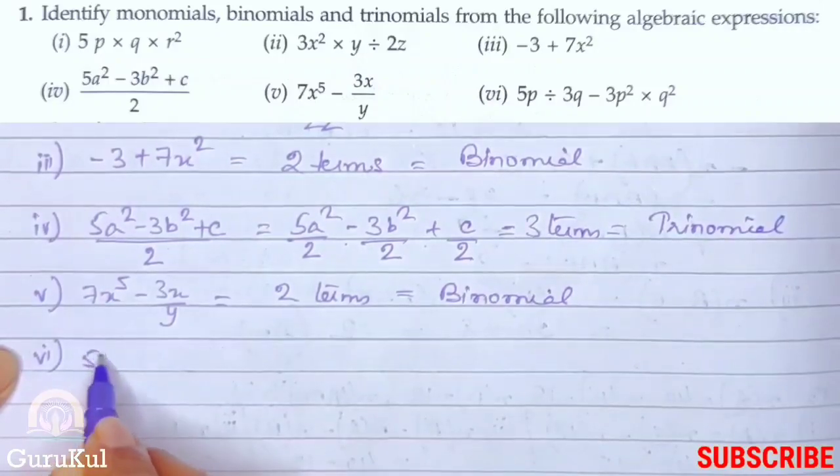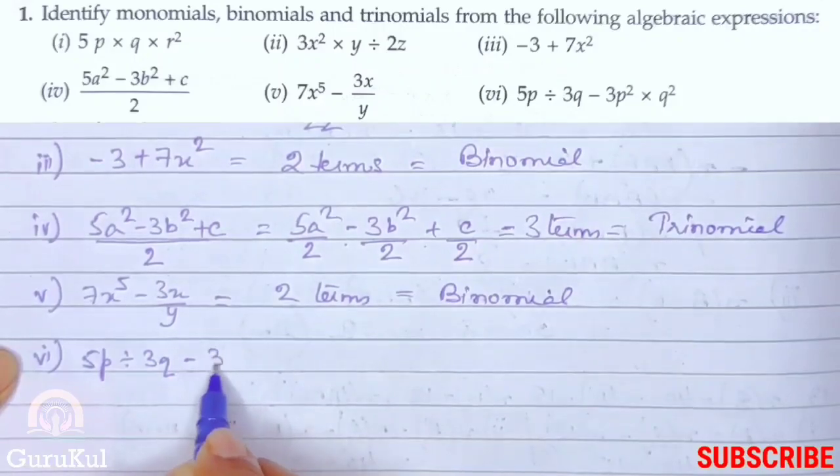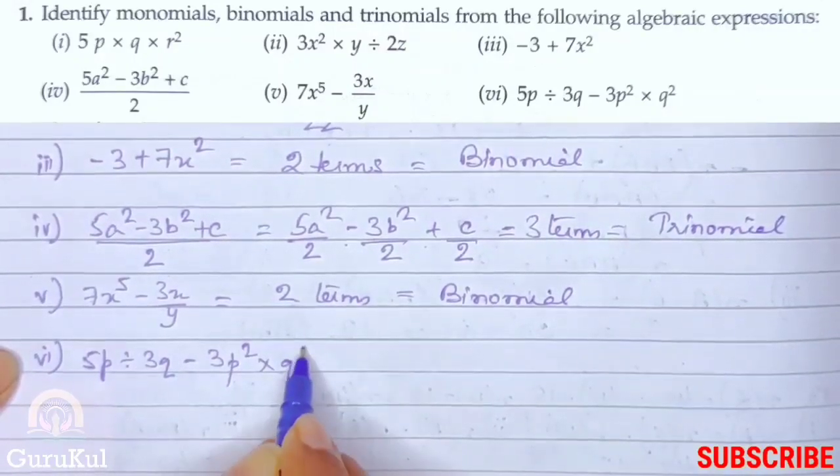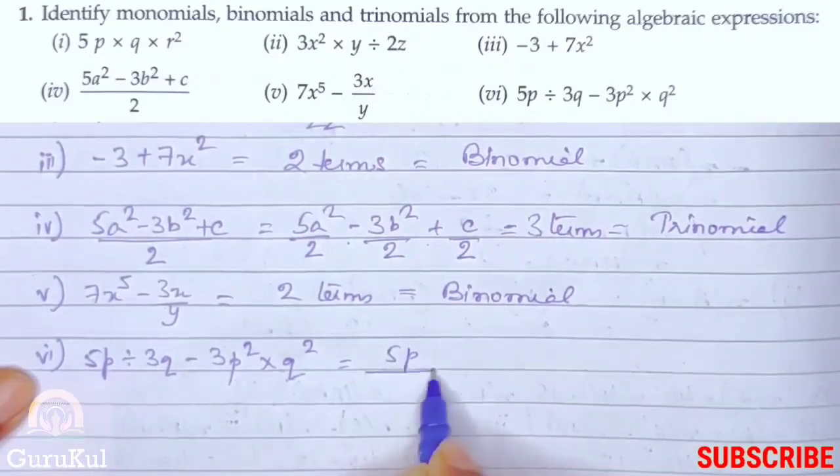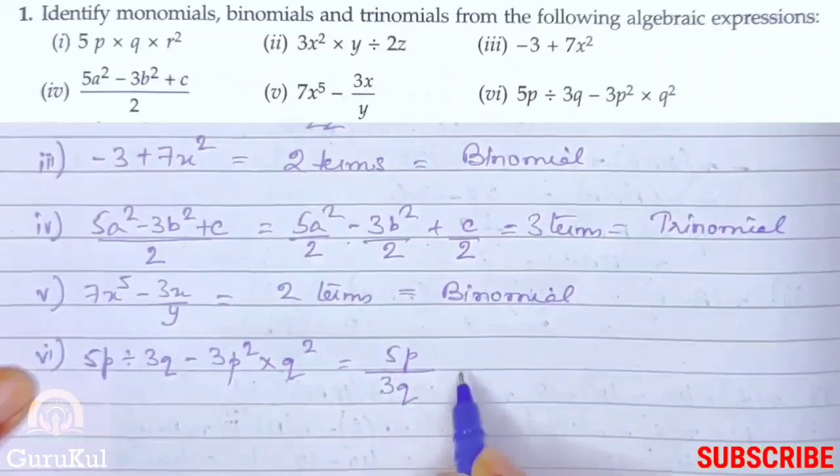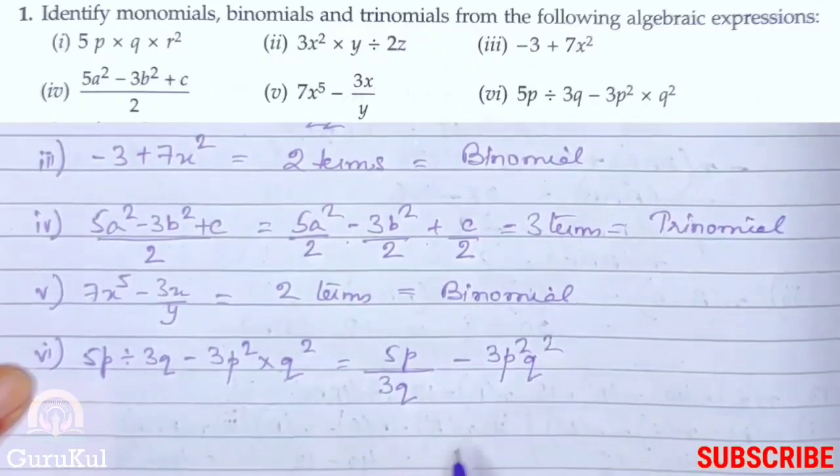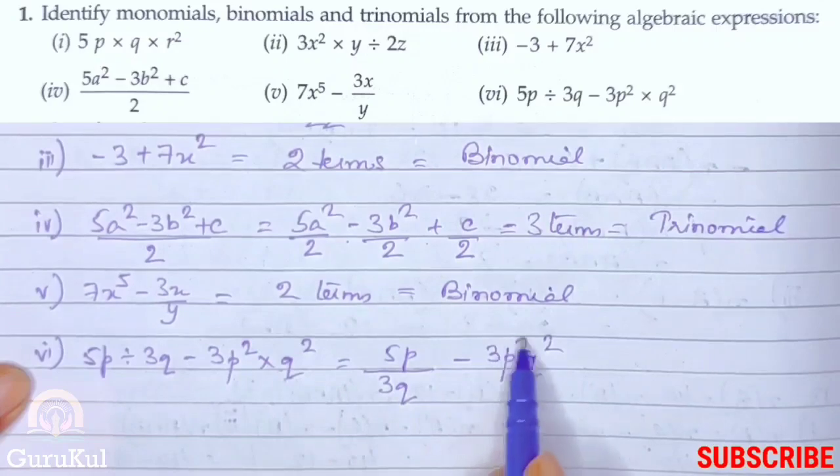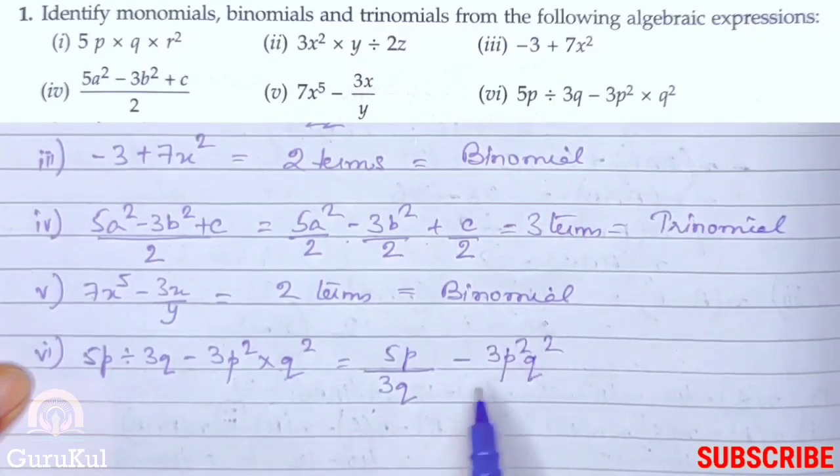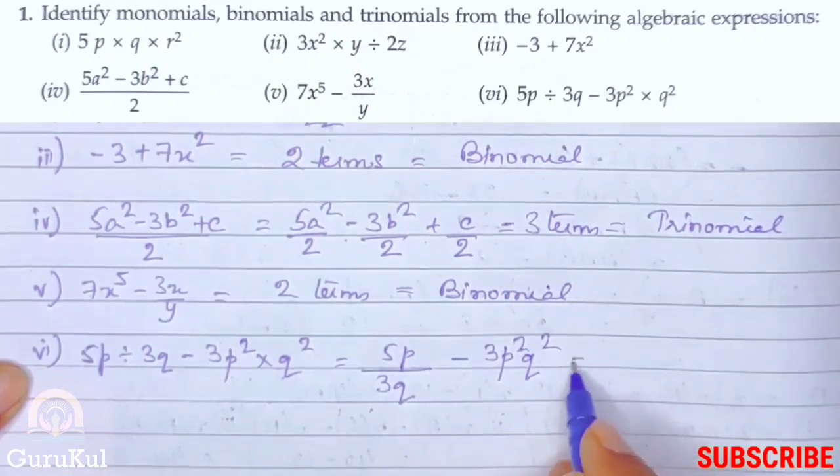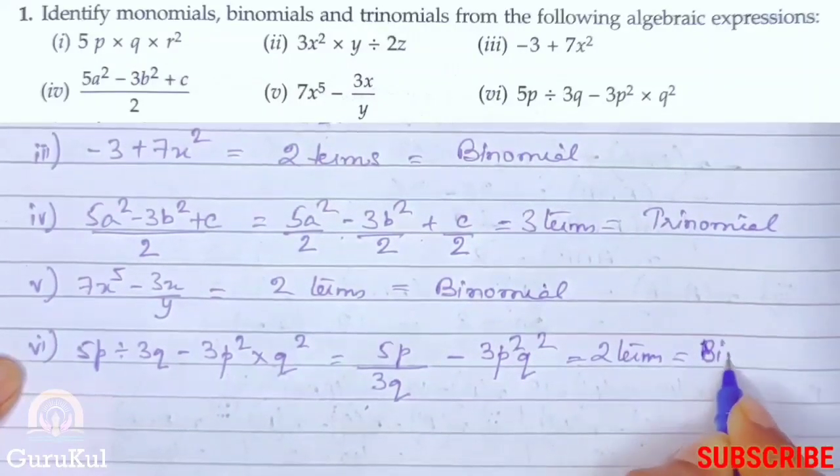Sixth one, 5p divided by 3q minus 3p square into q square. So how do we write this? 5p divided by 3q minus 3p square q square. Clear? This is multiplication sign, that's why we write it this way. This is division, so this becomes a fraction. So we have one and two terms separated by a negative sign. Hence, two terms. And we are going to call this binomial.